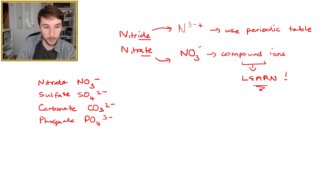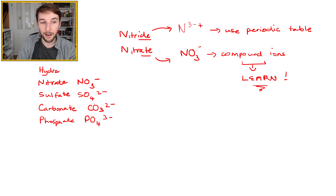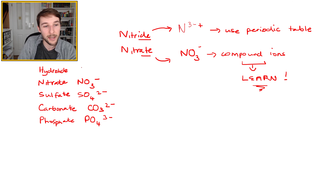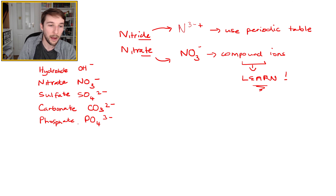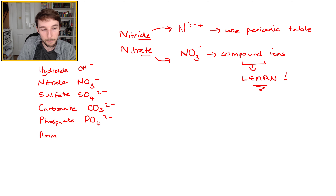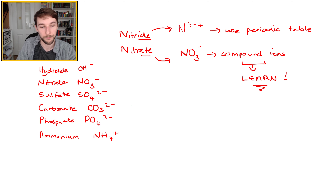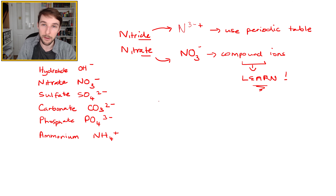Hydroxide is OH−: one oxygen, one hydrogen, single minus charge. Note it ends in -ide but cannot be found on the periodic table — an exception to the rule. Ammonium is a positively charged compound ion: NH4+, one nitrogen, four hydrogens, single positive charge. If you don't learn these compound ions going into A-level chemistry, you're going to have a bad time.